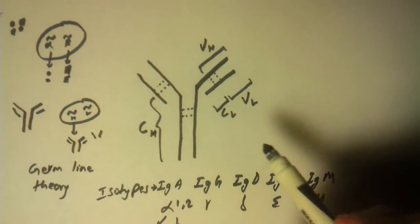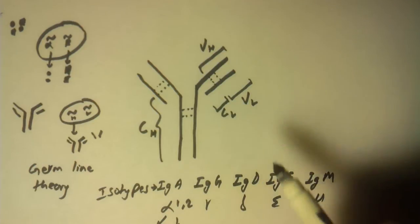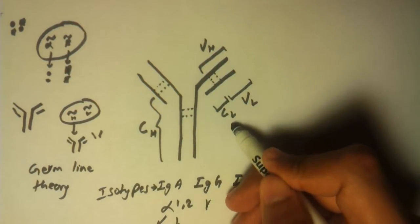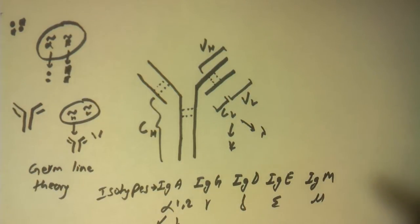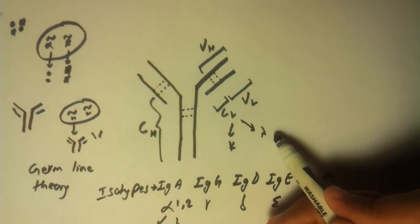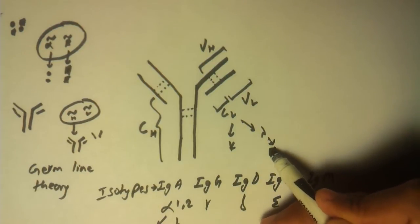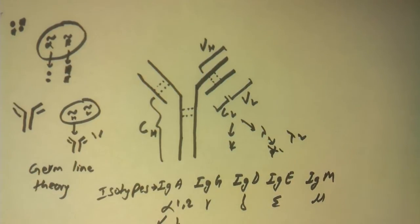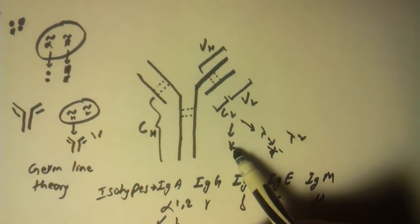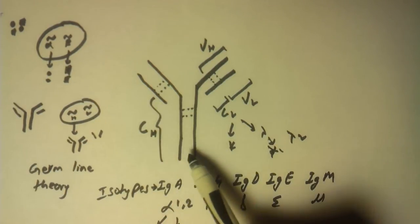In the same way, the constant region of light chain has two different types: one is called kappa and one is called lambda. Lambda has two different types: lambda 1 and lambda 2. You guys should make a note that kappa and lambda are not isotypes—isotypes are only based on constant region of the heavy chain.